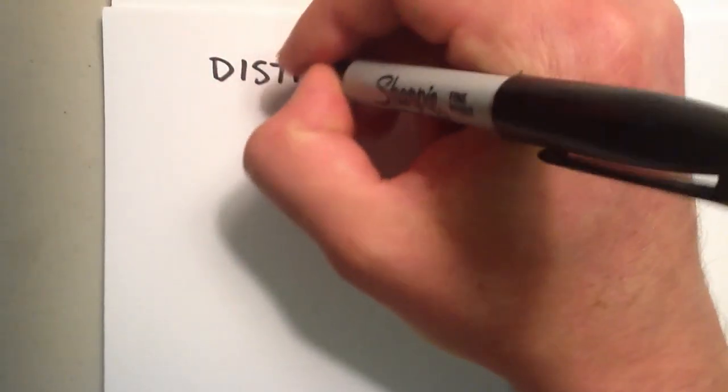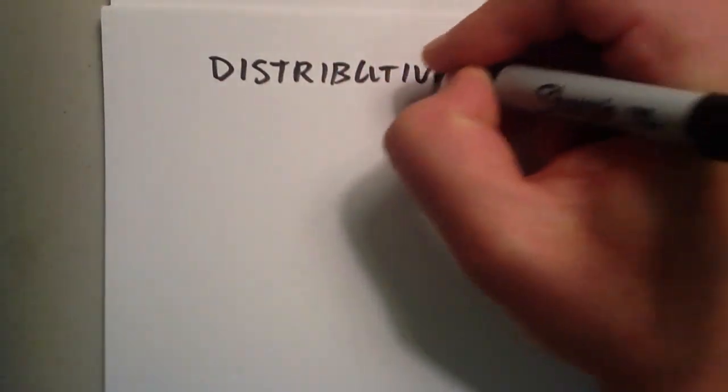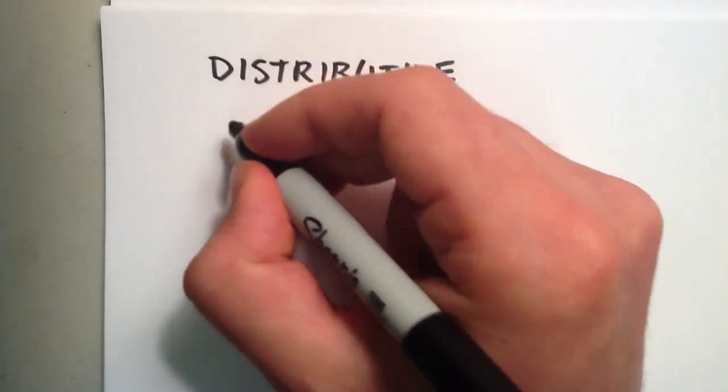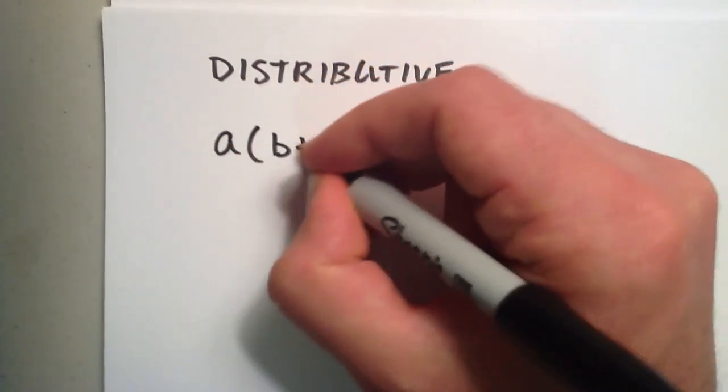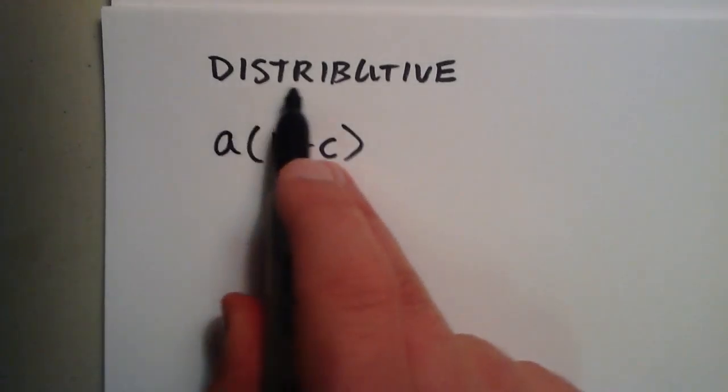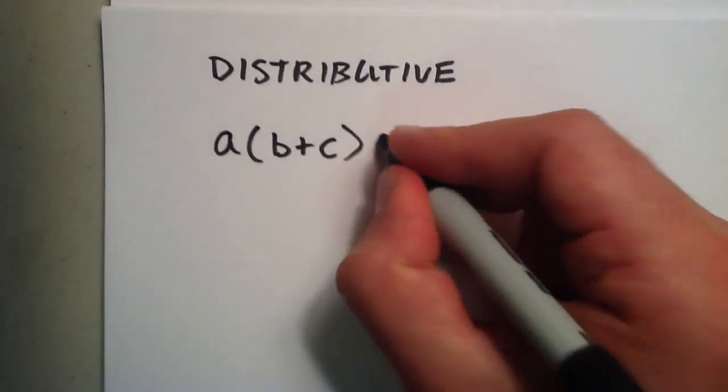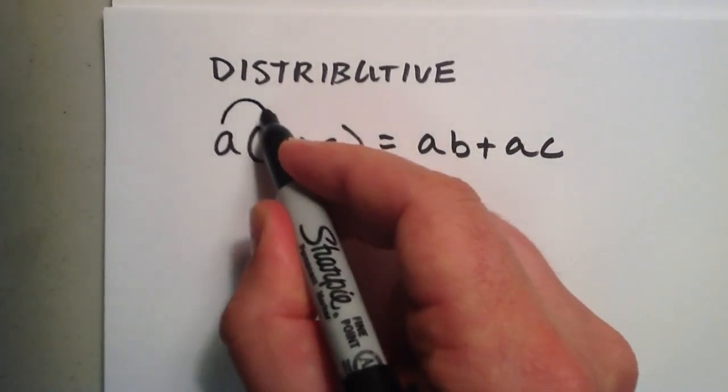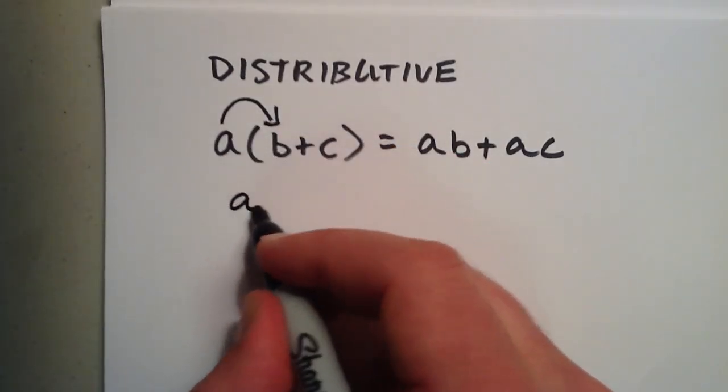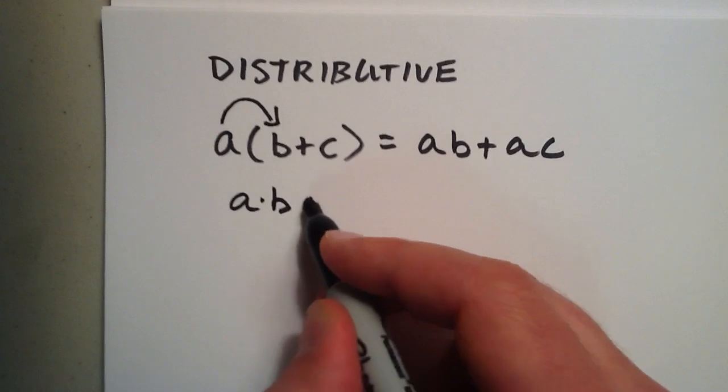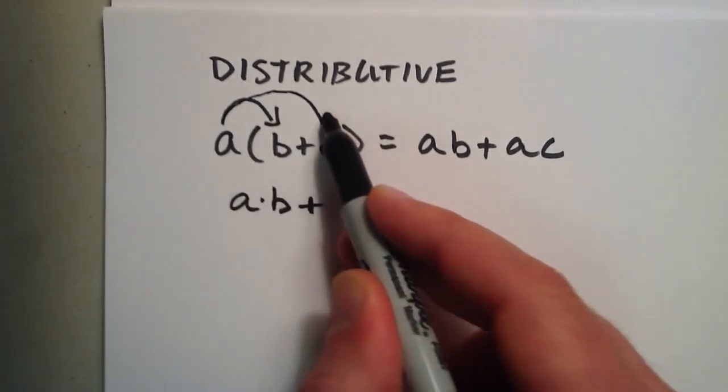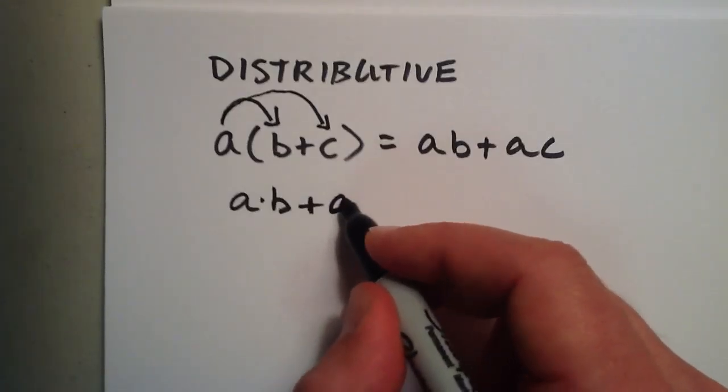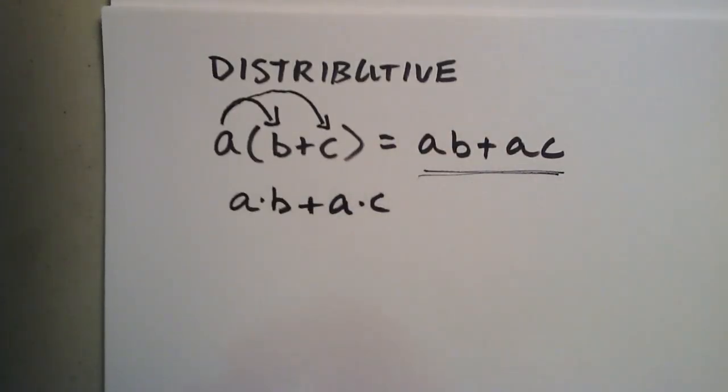Okay, the next one is the distributive property. So, the distributive property, basically, the reason why it's called distributive is because the A multiplies or distributes into the parentheses, into the terms, to give us this result here. So, basically, the A gets distributed and multiplies times the B. So, you get A times B. Then you put the addition sign here. And then it distributes to the next term, to the C, and becomes A times C, which is how you got this result right here.